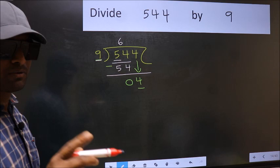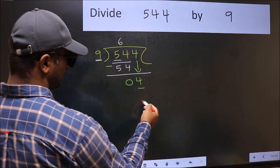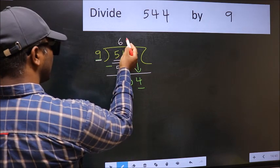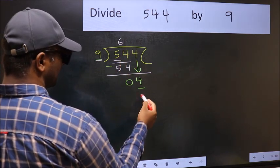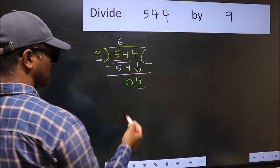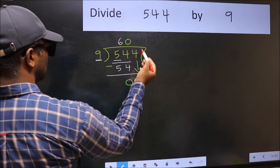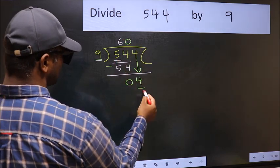Instead, what you should think of doing is which number should we take here? If I take 1, we will get 9. But 9 is larger than 4. So what we should do is we should take 0. So 9 into 0, 0.